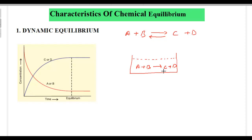But since the reaction is reversible, C and D again combine and form the reactants A and B. So with time, we find that initially the rate of concentration is very high, and that keeps on decreasing. You can see in the graph: the concentration of the reactants A and B is very high initially, and with time the concentration of the reactants decreases. And the concentration of the products C and D — initially it was zero — will keep on increasing.